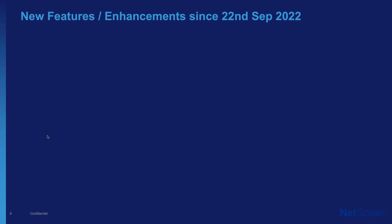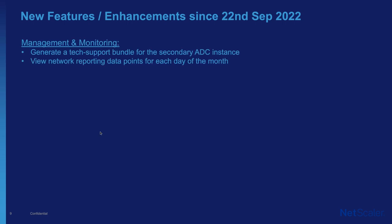Let's go ahead with the next session, covering new features and enhancements brought into the ADM service since our last connect on the September 22nd webinar. The first is management and monitoring: you now have the option under the tech support bundle to generate a bundle for the secondary ADC instance. The second is network reporting, where data points for each day when selecting a one-month duration are now available.